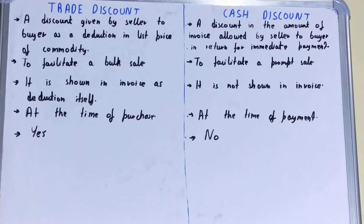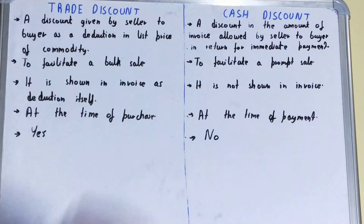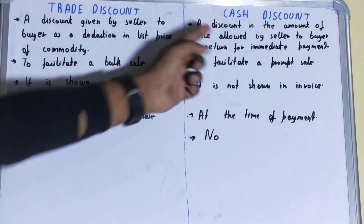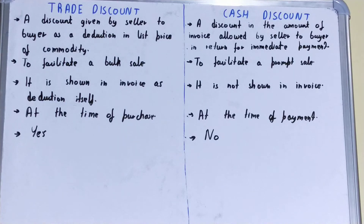Cash discount is a discount in the amount of the invoice allowed by the seller to the buyer in return for immediate payment. It's a kind of discount in which the invoice amount is reduced in return for immediate payment from the buyer.